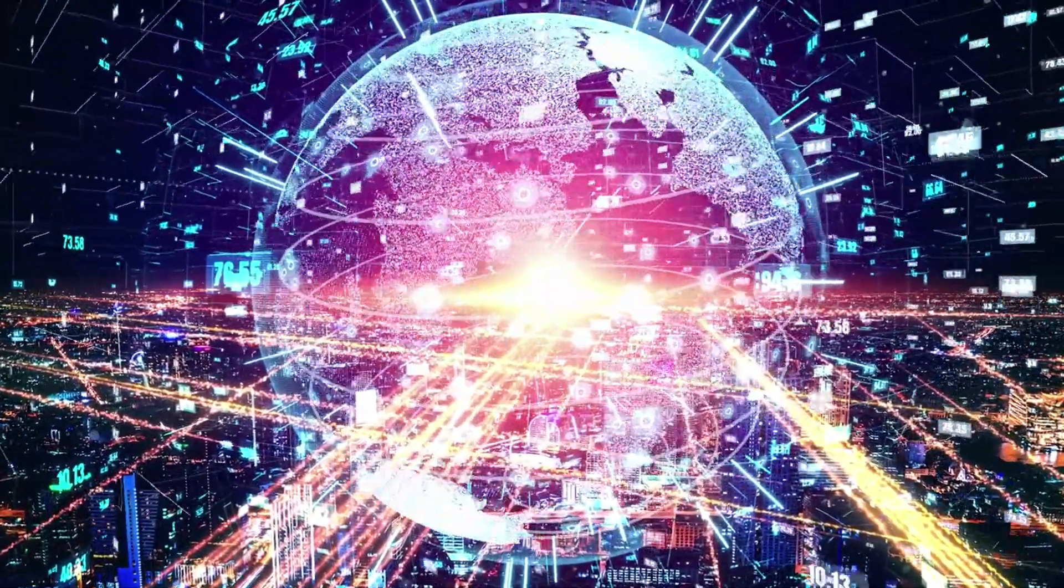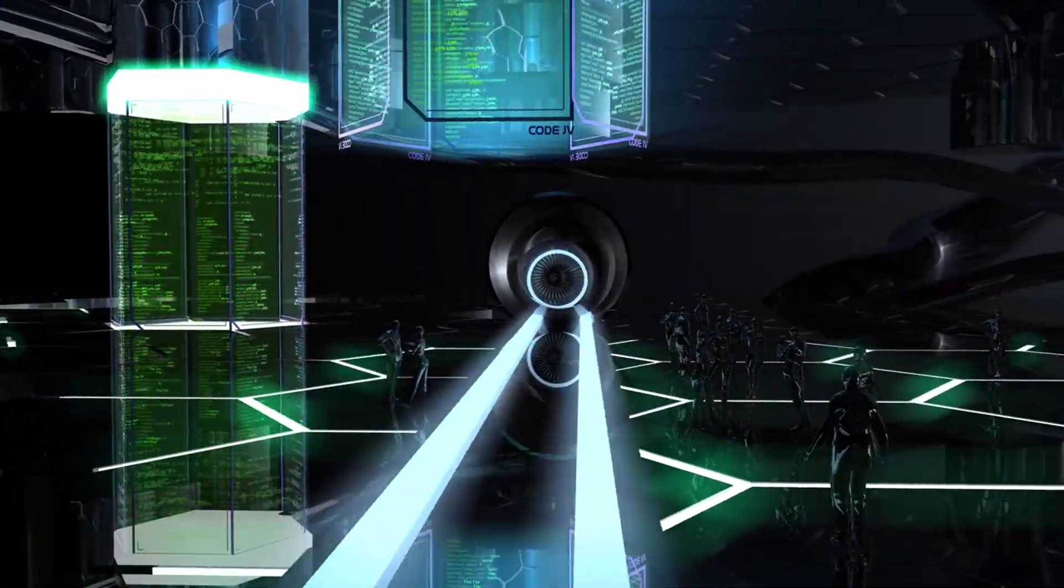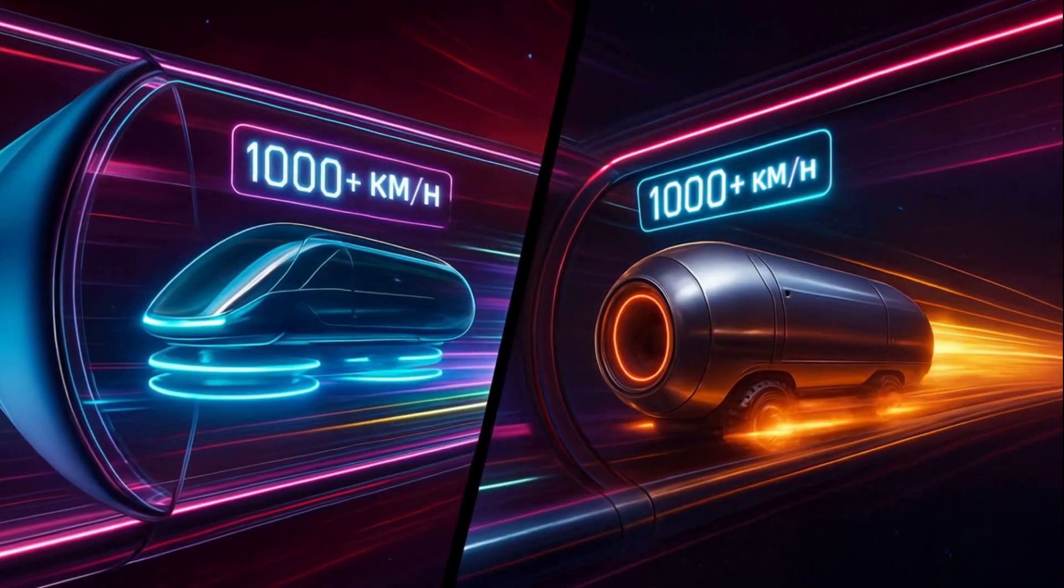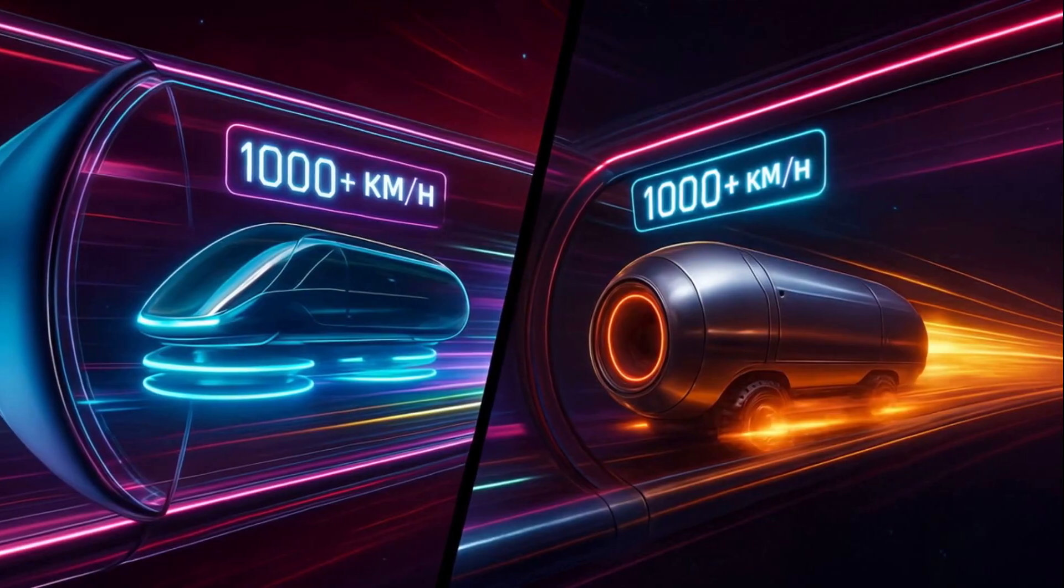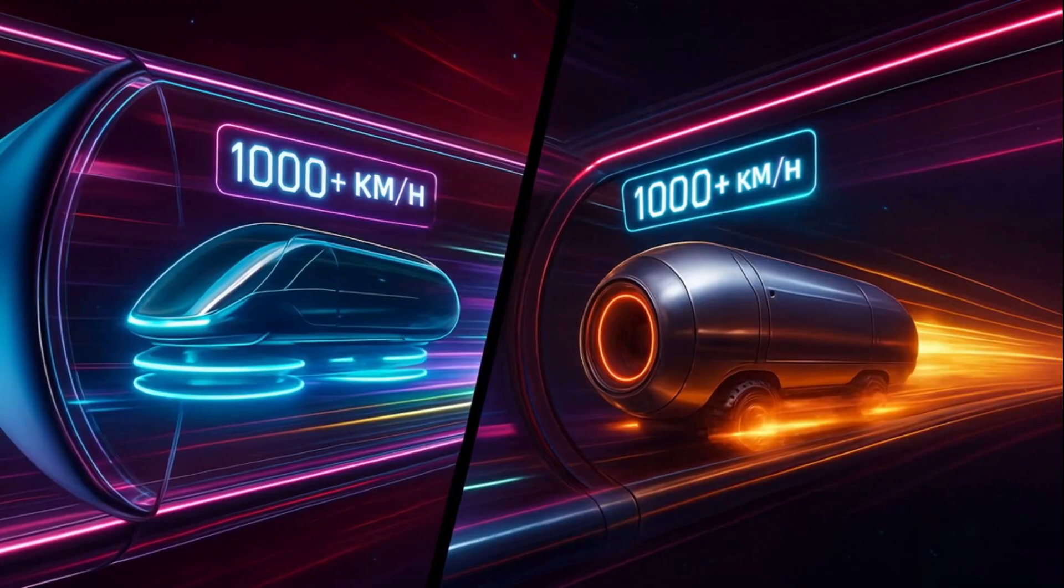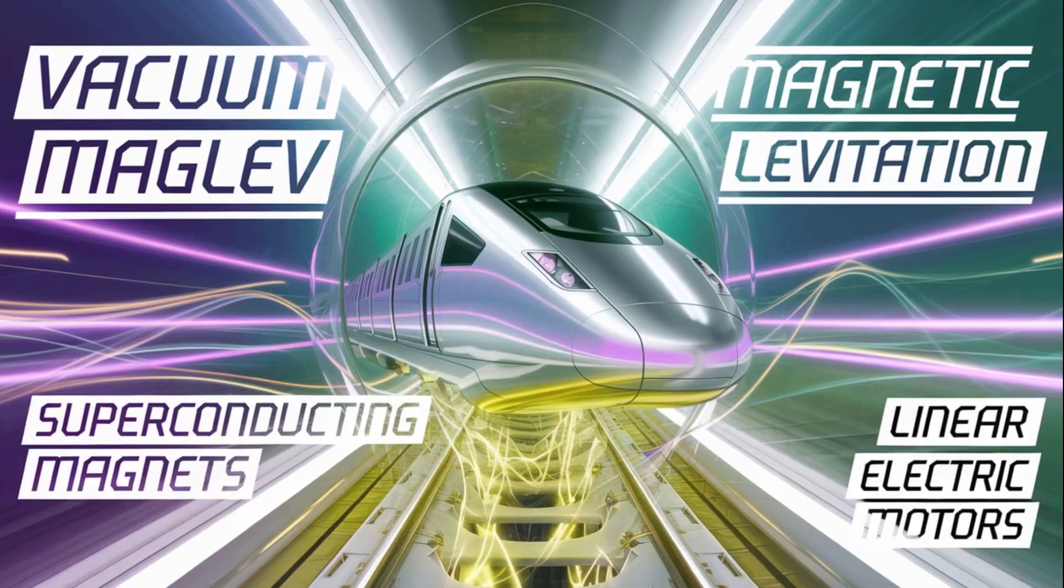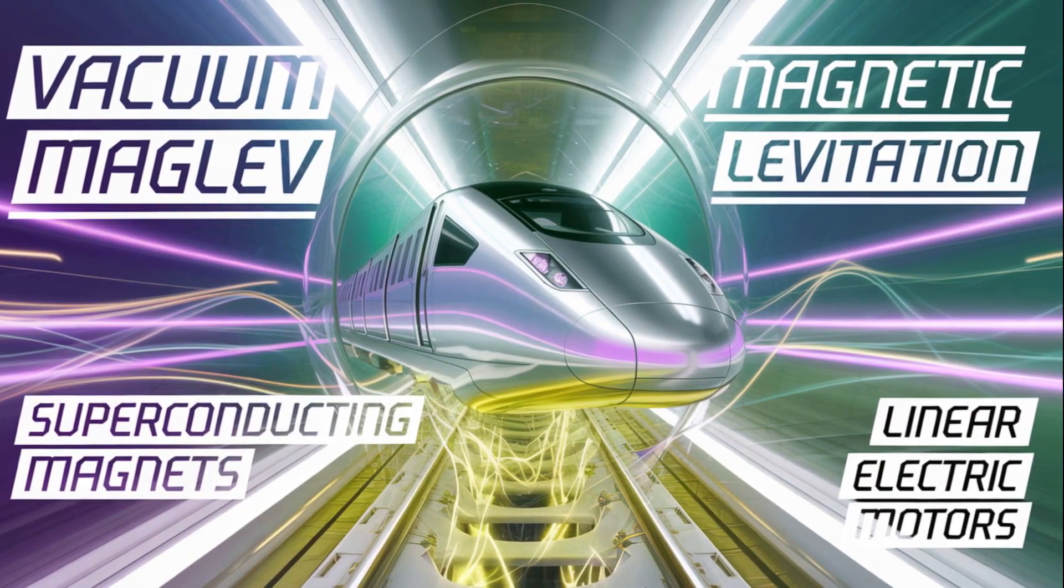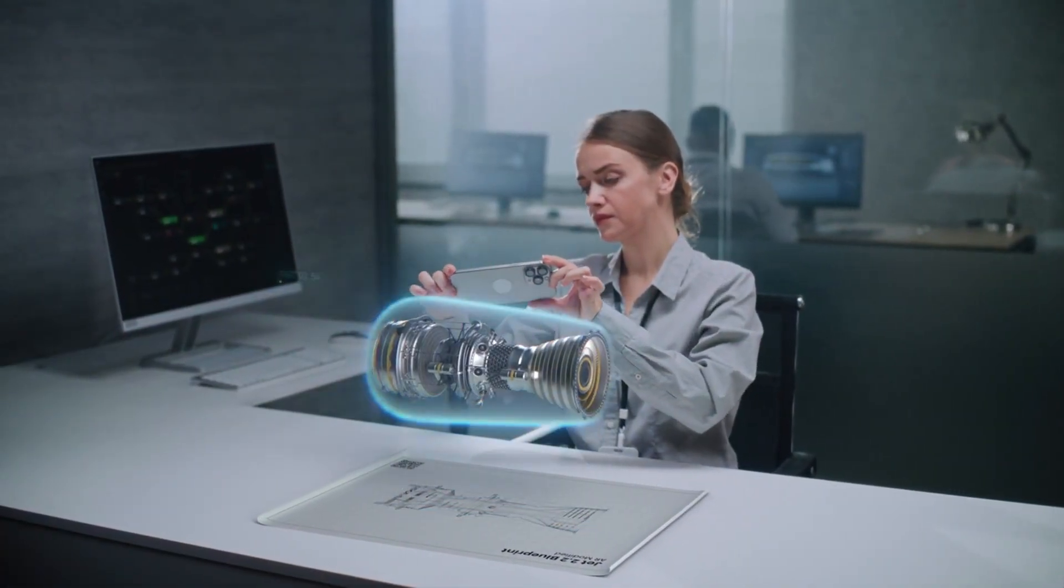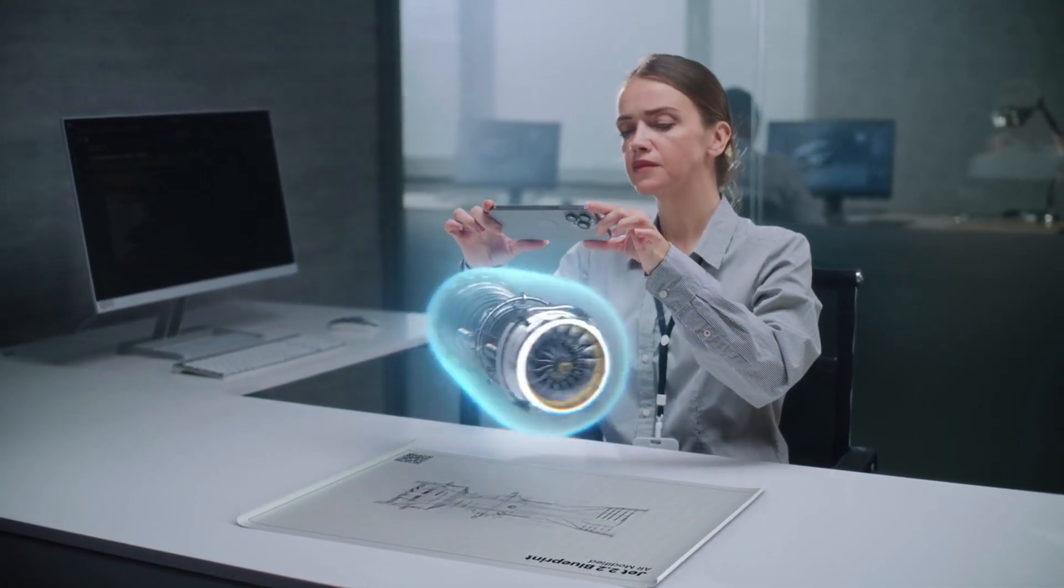Now let's see what makes vacuum maglev different from Hyperloops. Here is what happens when two of the world's most futuristic transportation technologies go head-to-head. Both promise travel speeds over 1,000 kilometers per hour, frictionless movement, and an end to air travel as we know it. But their technology is radically different. As we already know, vacuum maglev uses magnetic levitation inside vacuum-sealed tubes, lifting trains off the track with superconducting magnets and propelling them using linear electric motors, already tested in countries like China and Japan.